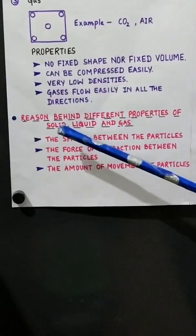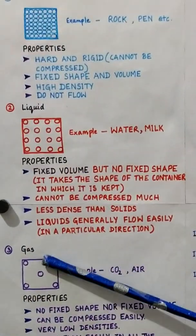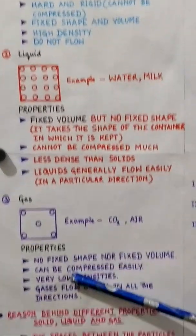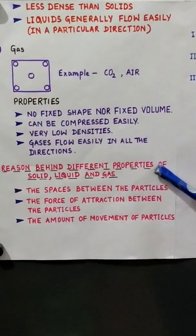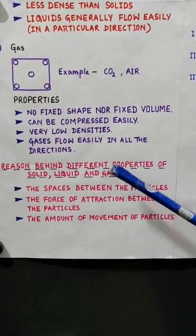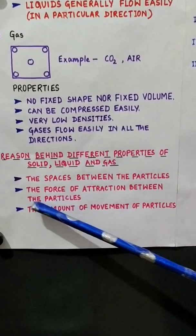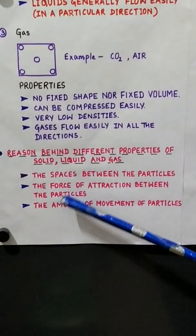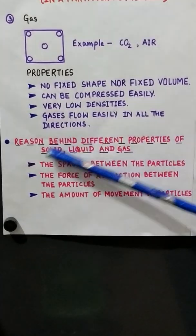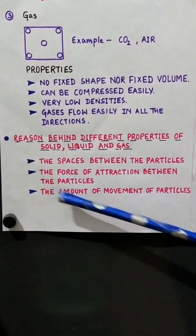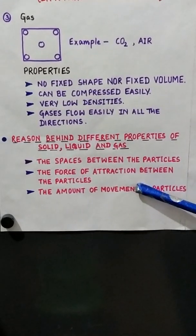Now that we have studied all three states of matter — solid, liquid and gas — and their properties, we can say that the reason behind the different properties is: the spaces between the particles, the force of attraction between the particles, and the amount of movement of particles. These three are the basic reasons responsible for all the different properties of solid, liquid and gas.